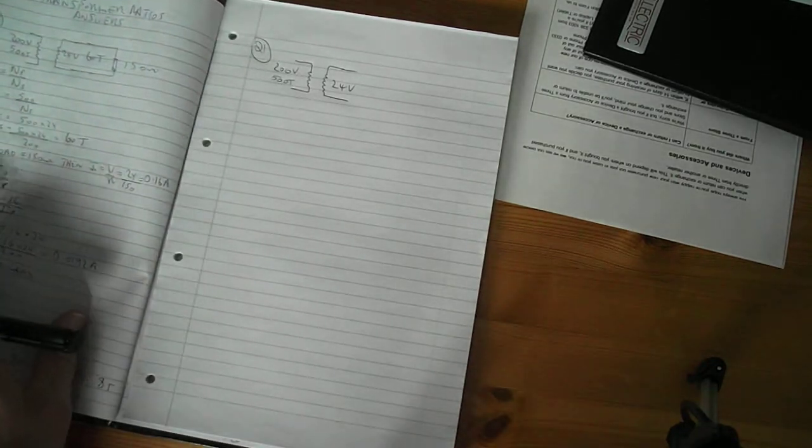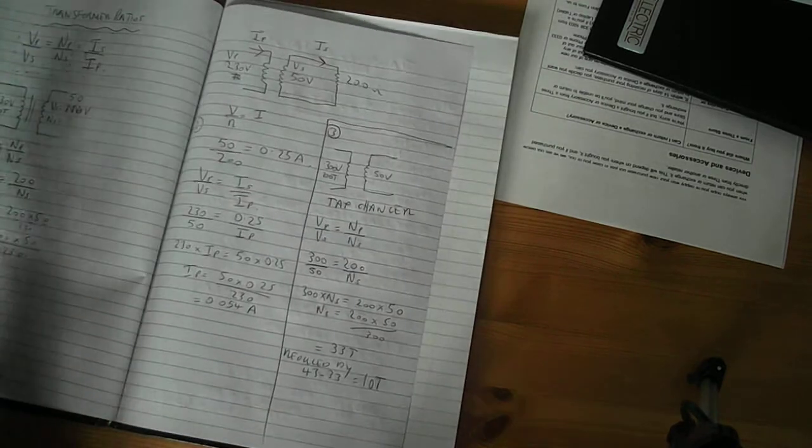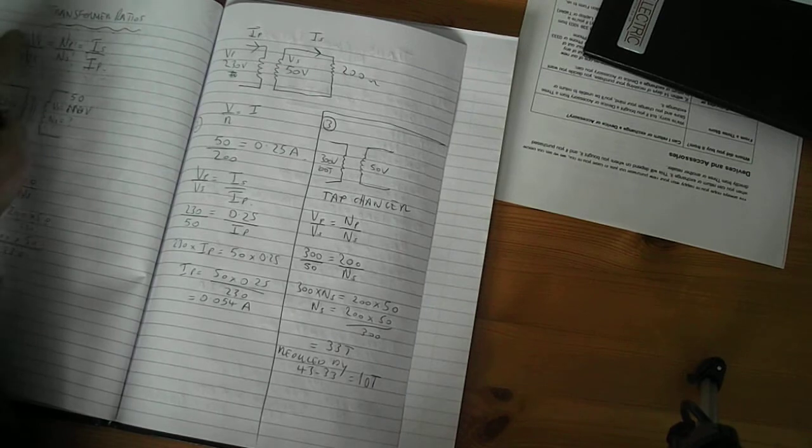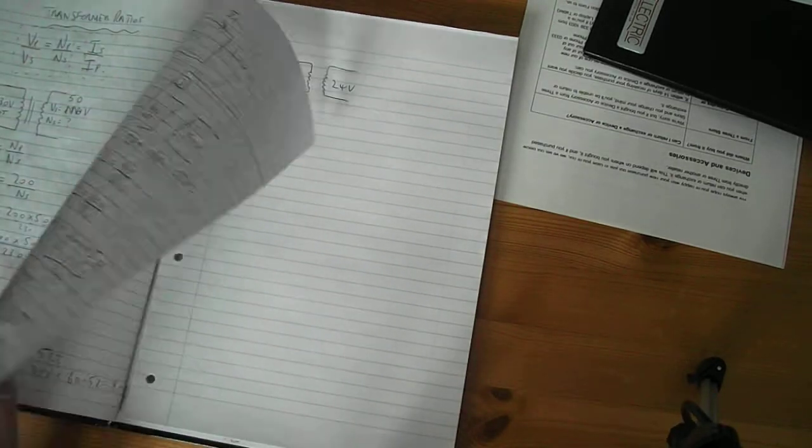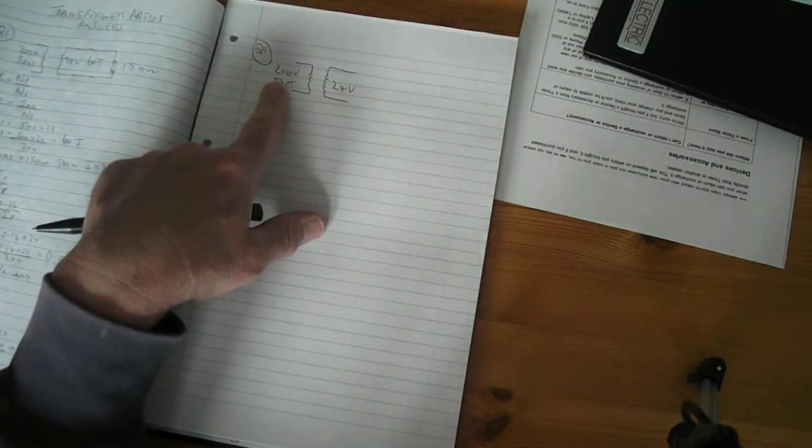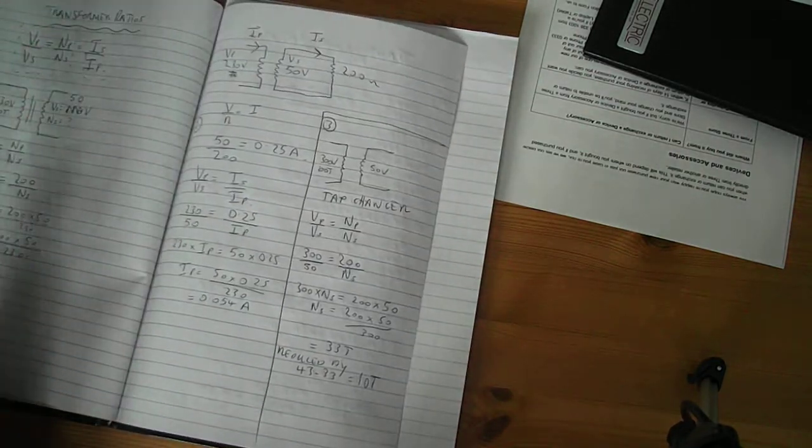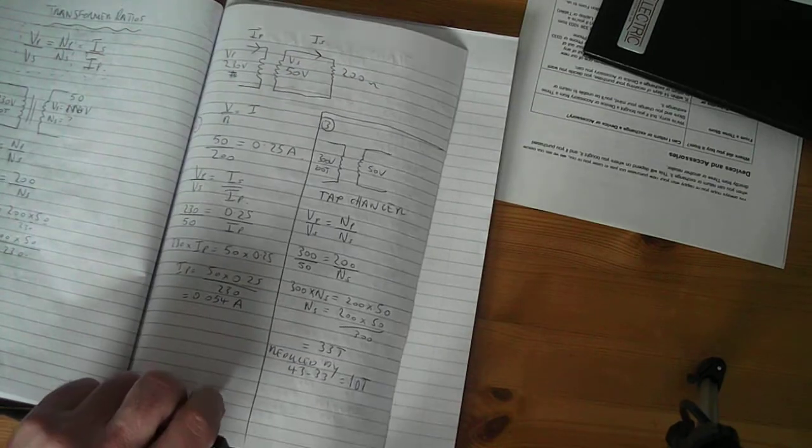So we know from our basic formula, this one, that we need to use a pair of these. So in this case, to find the first one, we're asked to find turns on the secondary, we're given turns on the primary, we're given a primary voltage and a secondary voltage. I can use this pair here, Vp over Vs equals NP over NS.